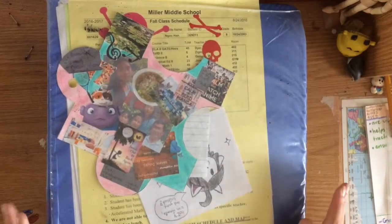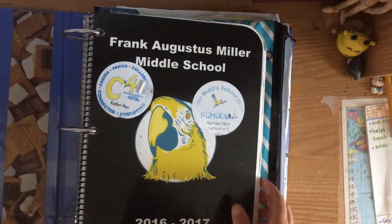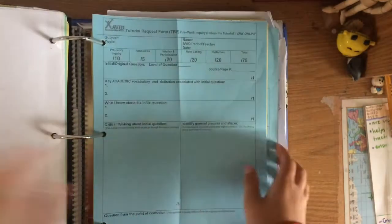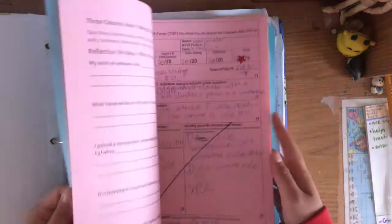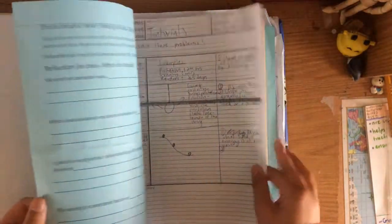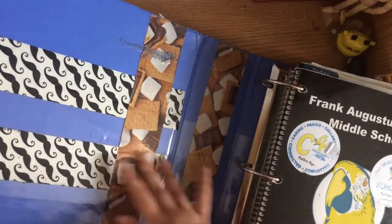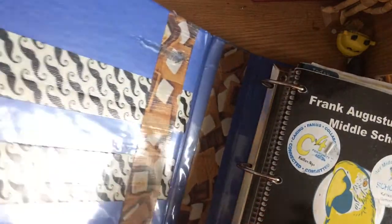The third part of a binder check is checking binder organization. Papers should always be in chronological order. Pockets in your binder cannot be in use. It is suggested that you would duct tape them to resist the temptation of using them.